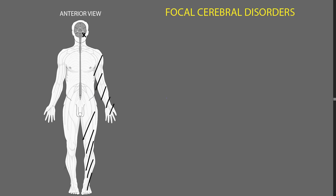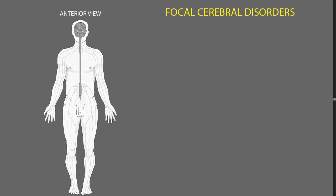Or incoordination of walking — incoordination of both legs during the act of walking. Focal lesions in the cerebrum or the brain stem can cause lots of different kinds of abnormalities, because the cerebrum and the brain stem perform so many functions.